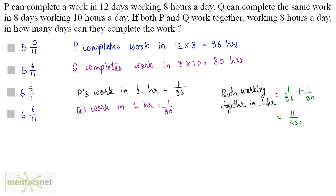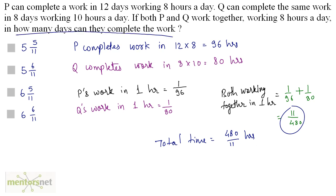If both work together for 1 hour, the amount of work done is 11 by 480. To fully complete the work, the total time taken by both working together is the reciprocal of this — 480 by 11 hours. Since we want the number of days working 8 hours per day, we divide by 8, which gives 60 by 11 days. So the answer is option A.